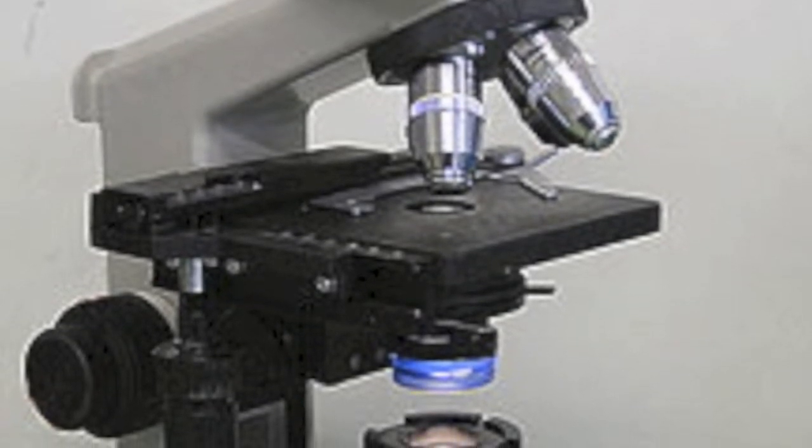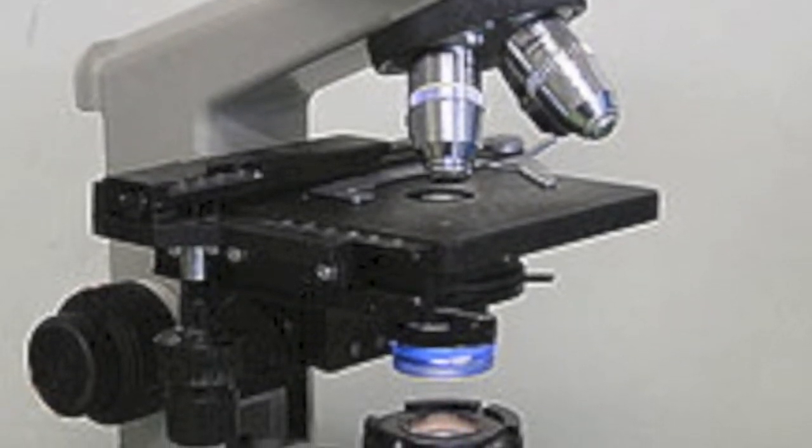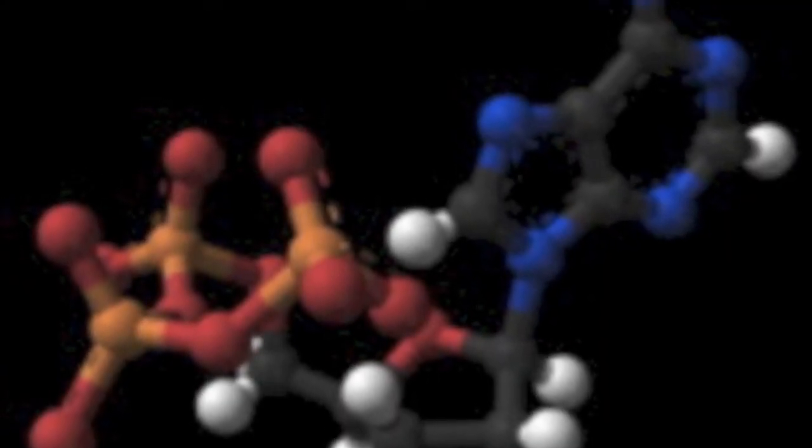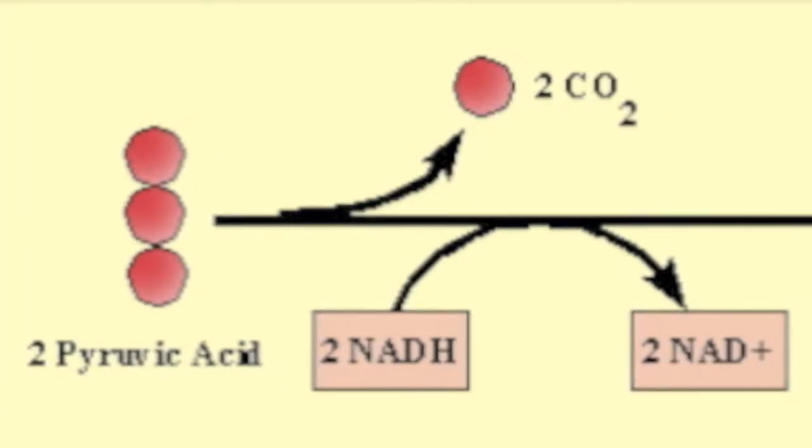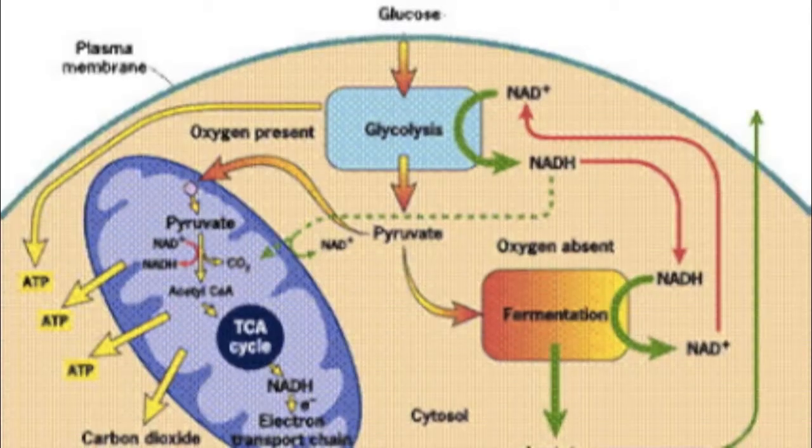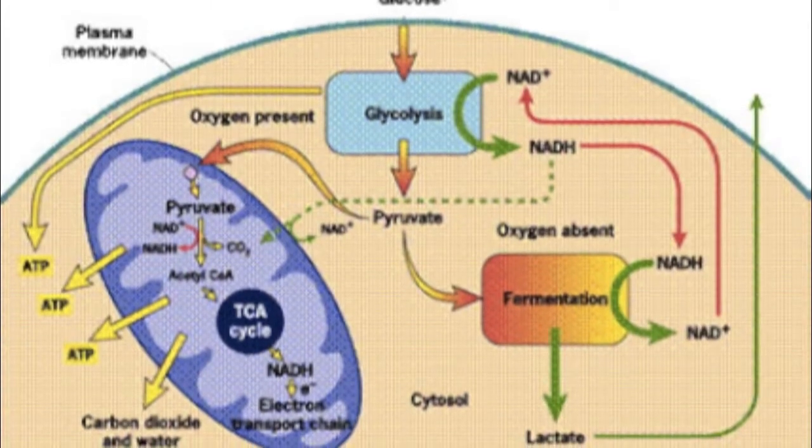Oligomycin binds to the ATP synthase enzyme and prevents the formation of ATP from ADP and phosphate. The oxygen consumption is affected in the mitochondria, which results in the process of fermentation and anaerobic cellular respiration. This leads to waste products such as lactic acid building up in the cells.